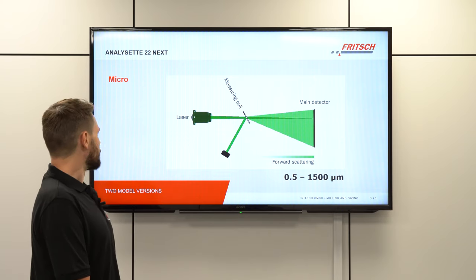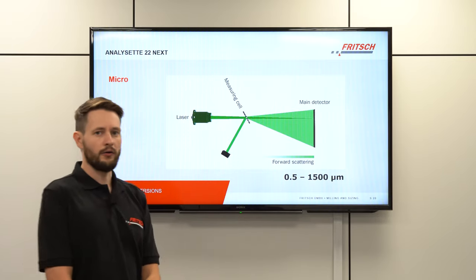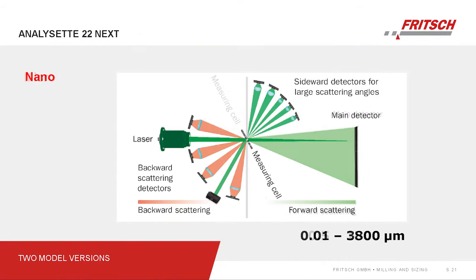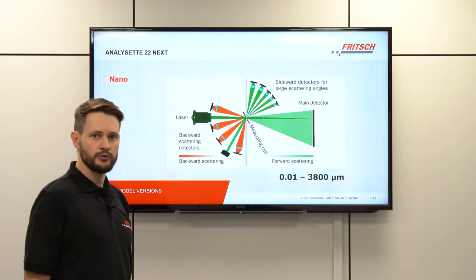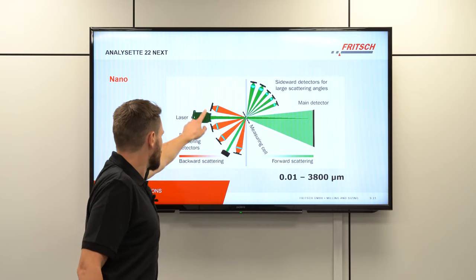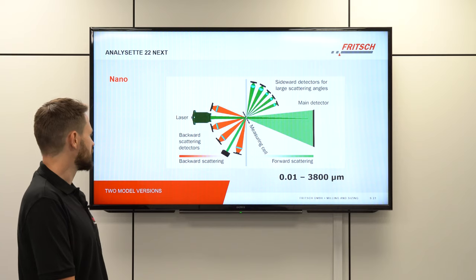On the bottom we find a monitor diode that constantly checks laser output power by the reflection of the laser at the measuring cell. In the full-blown version, the NLZ22NEXT NANO, there are additional detectors — 5 detectors responsible for detecting large scattering angles, and 4 additional detectors for backward scattering, which decrease the lower measurement limit to around 10 nanometers.